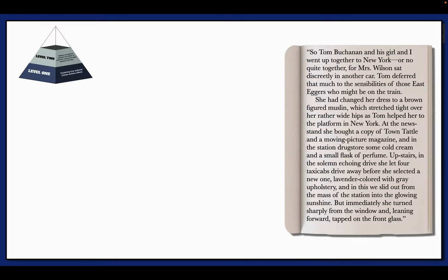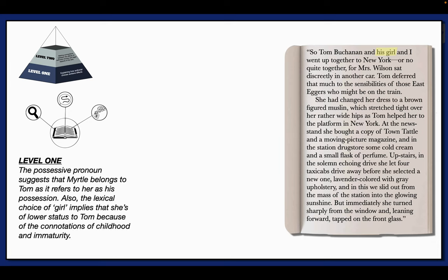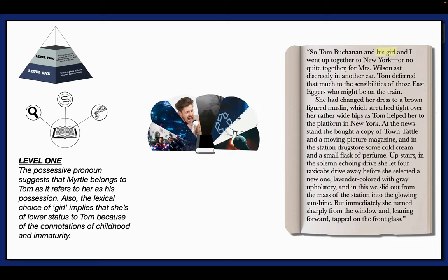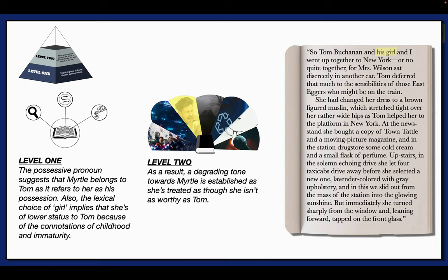Now, let's look at an example of this and how it relates to level one. We have a section from The Great Gatsby. As we're reading, we might think of level one and find this interesting choice here. The narrator says, Tom Buchanan and his girl in reference to Myrtle. Well, you might say here the analysis of the possessive pronoun her suggests, which is another word for implies, that Myrtle belongs to Tom as it refers to her as a possession. Also, the lexical choice of girl emphasizes that she is of a lower status to Tom because of the connotations with children. As you can see here, we've looked at two choices in our level one and we've correctly identified the choice with their effect justifying how meaning is made. Next, we need to think about how these choices develop larger aspects of the text. Here might be a good opportunity to talk about tone, the attitude towards the thing being talked about. We could say that as a result, a degrading tone is established towards Myrtle as she's treated as not being worthy as Tom.